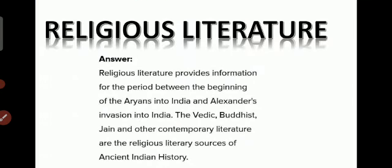Religious literature — by the word 'religious' you can understand what it means. Books and manuscripts that deal with religion are referred to as religious literature. Religious literature provides information for the period between the beginning of the Aryans into India and Alexander's invasion into India. The Vedas, the epics Ramayana and Mahabharata, the Upanishads, and the Bhagavad Gita are all examples of religious literature. These texts help us understand the religious practices, beliefs, and the social and economic life of that period.